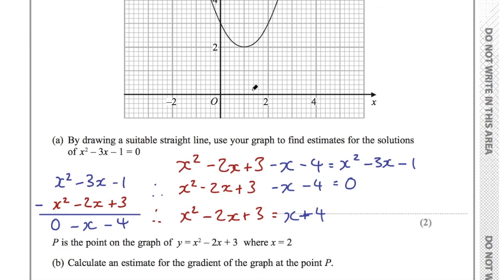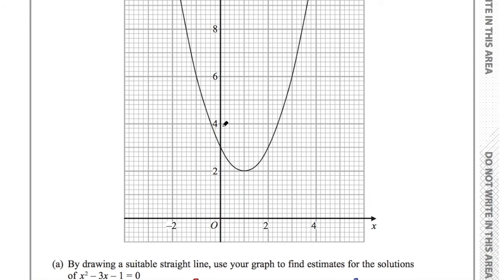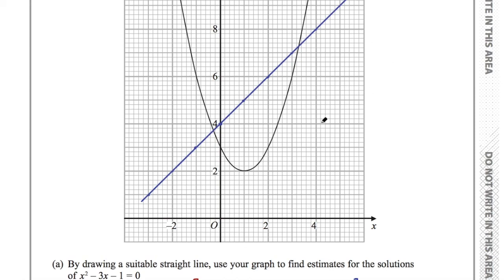It's really good practice in GCSEs to draw a straight line quickly given its equation. The gradient is the number before x, and plus 4 is the y-intercept. I start at the y-intercept of 4, and with a gradient of 1, I go up and across 1 each time to plot points, then draw a straight line through those points. This is y equals x plus 4.